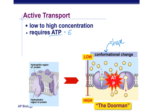You'll notice this purple protein here looks different than the channel protein did. The channel protein we had before just looked like a channel — like a little hot dog sitting there in the membrane — and molecules could just flow right through it. In this case, it's not like a channel or a tunnel. This protein is physically changing shape, forcing those molecules across the membrane, so that's going to require energy.